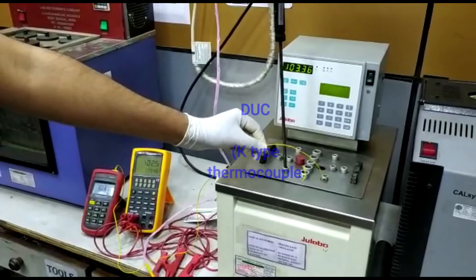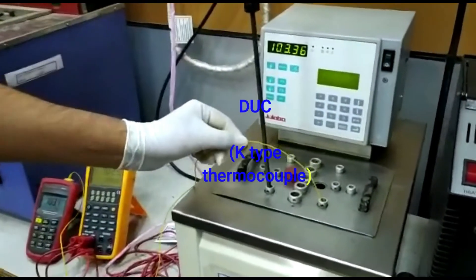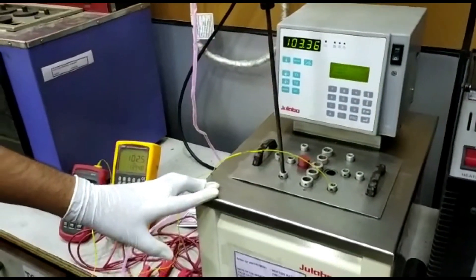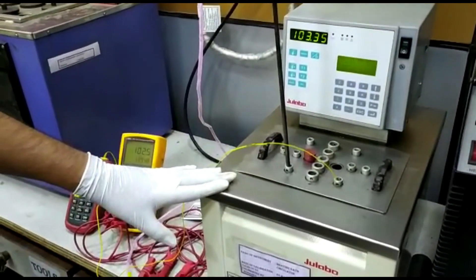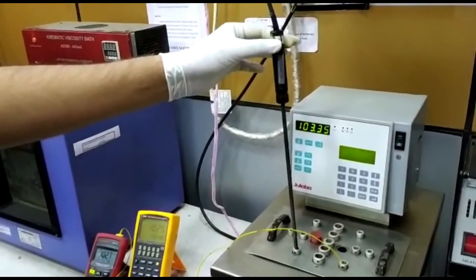We are going to calibrate a wire type A type thermocouple. This is the wire type A type thermocouple by using a comparison method of calibration by using a temperature bath. This is our oil bath and this is standard SPRT.